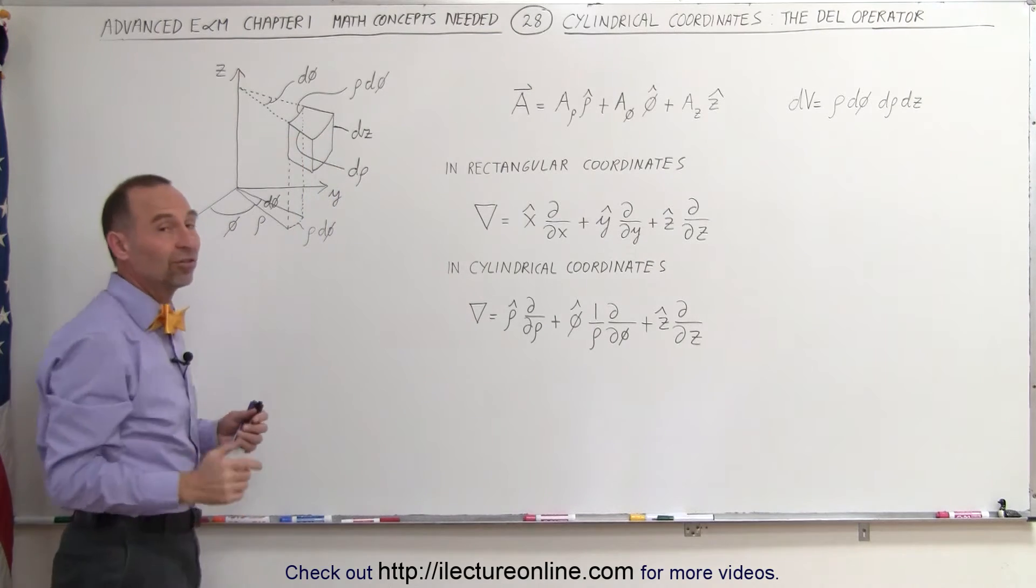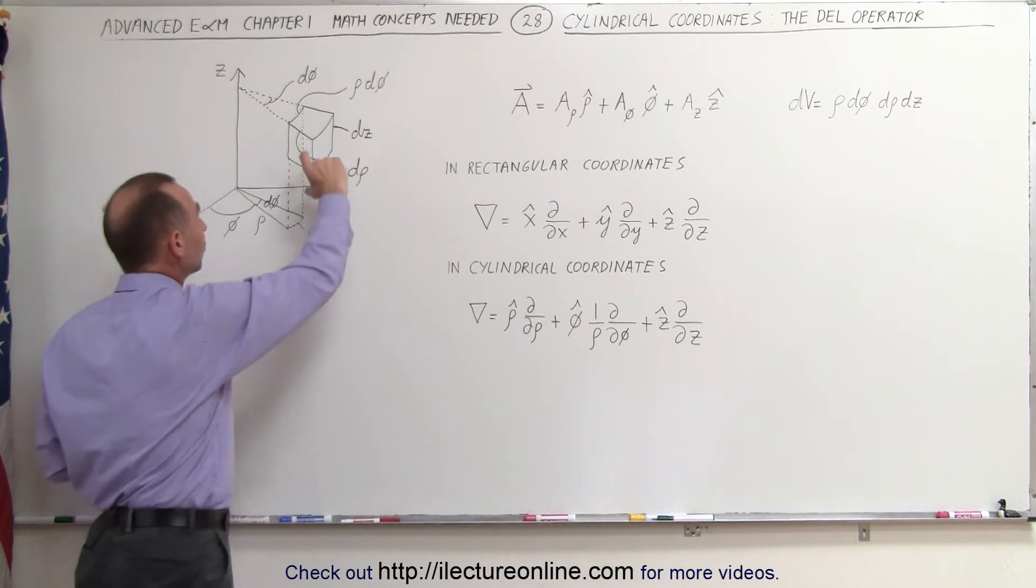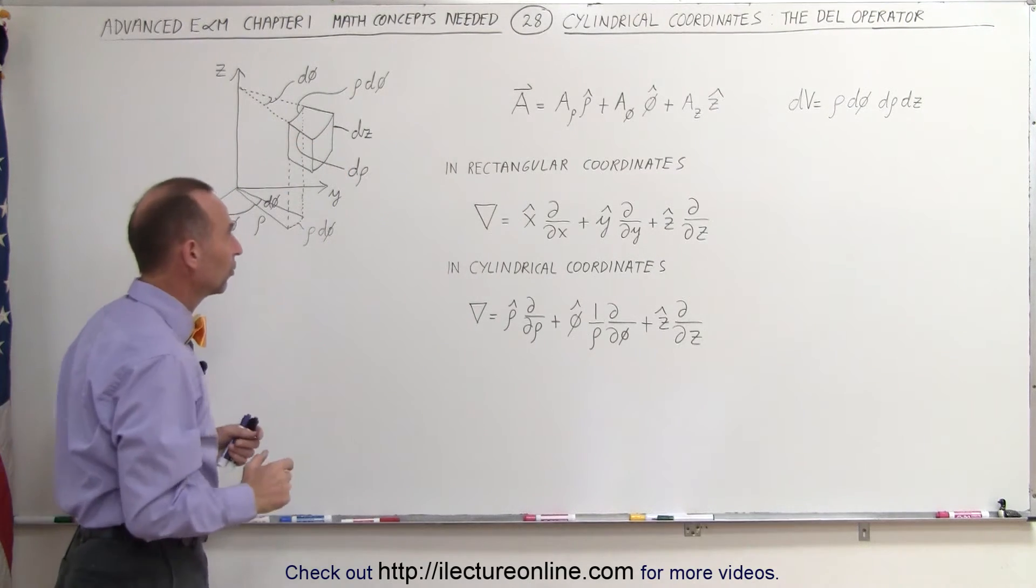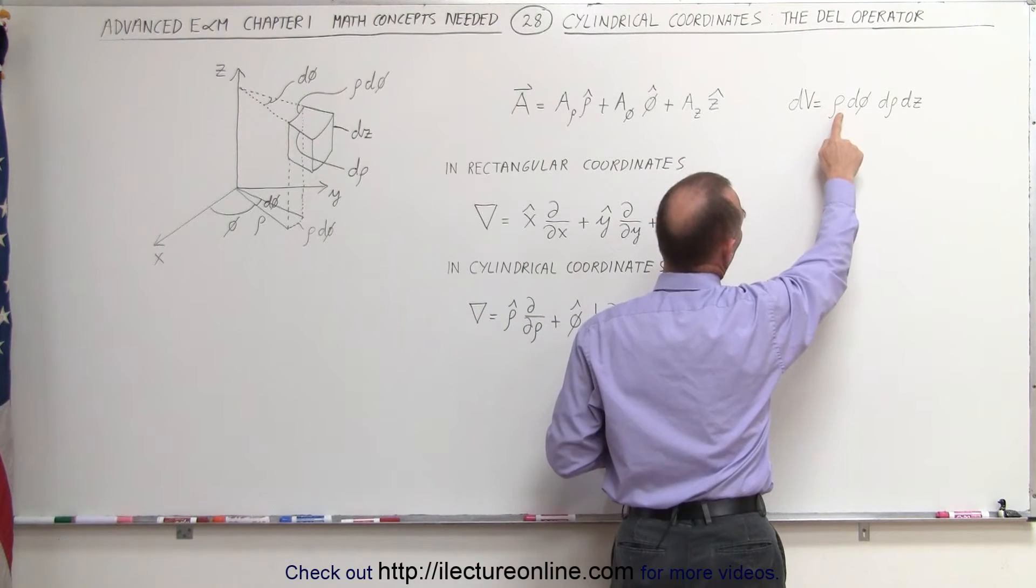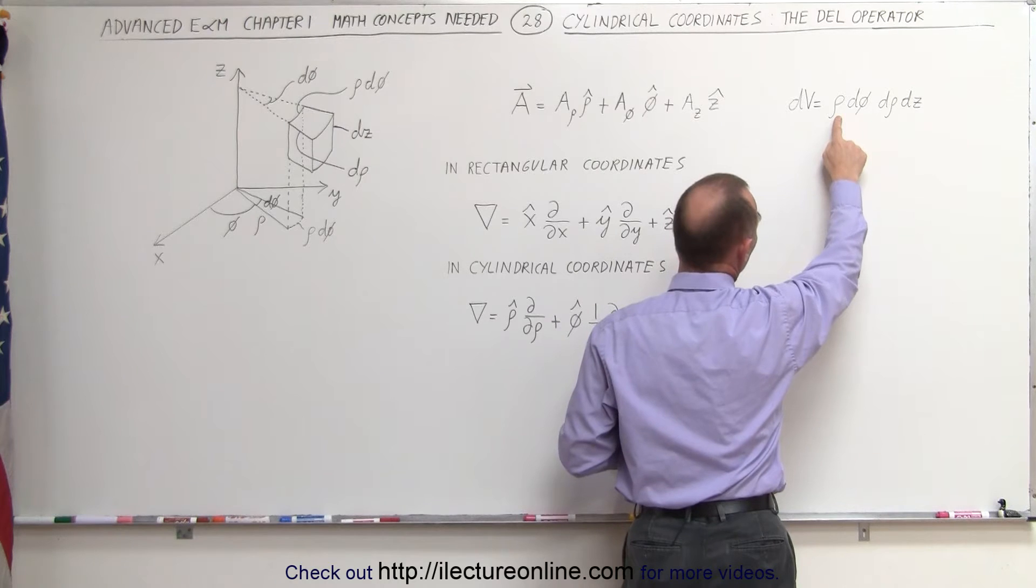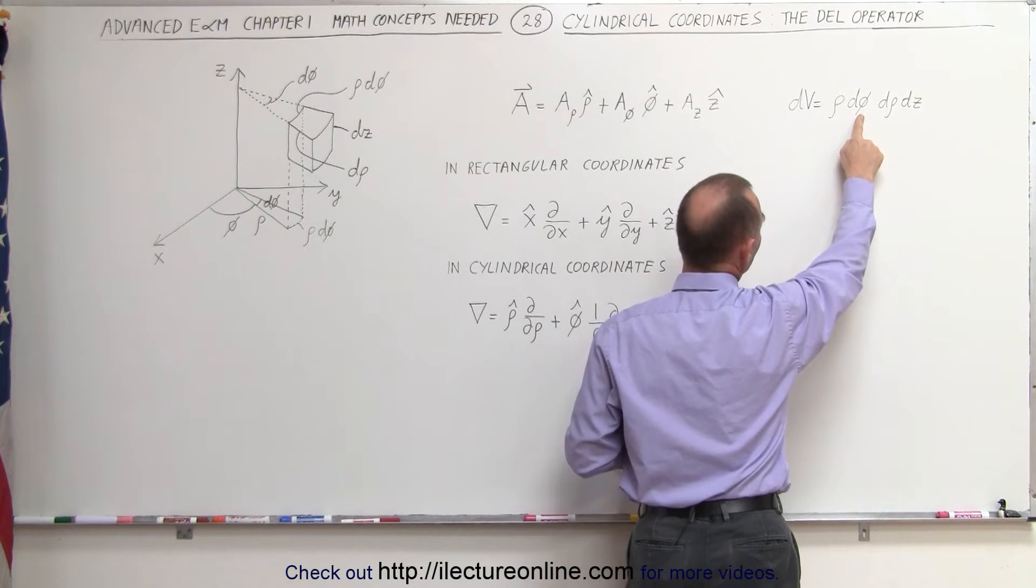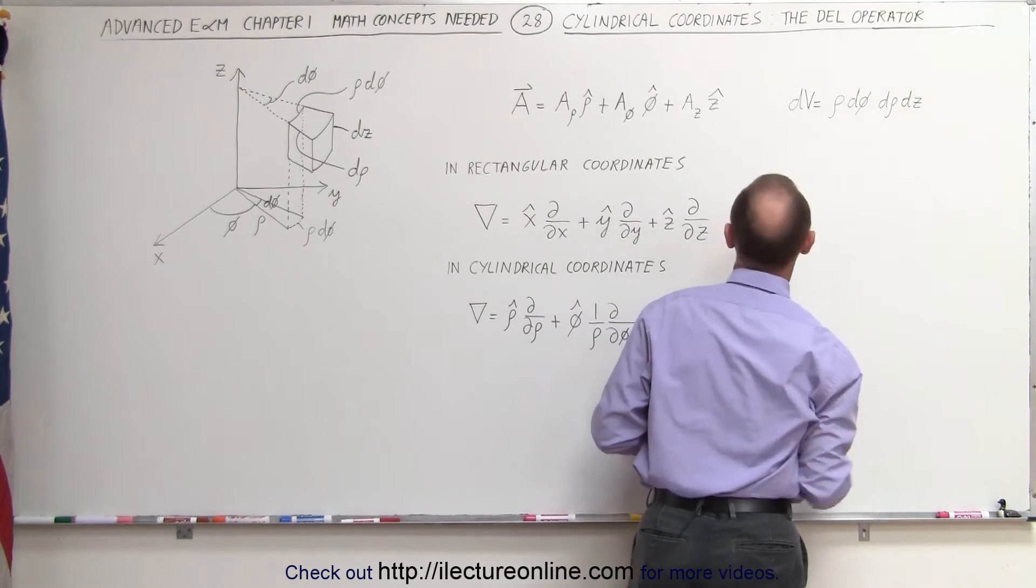And then in the z direction it's the same as rectangular coordinates. It's the change in the z direction. So you can see that a small volume element can be written as rho times d rho times d phi times dz.